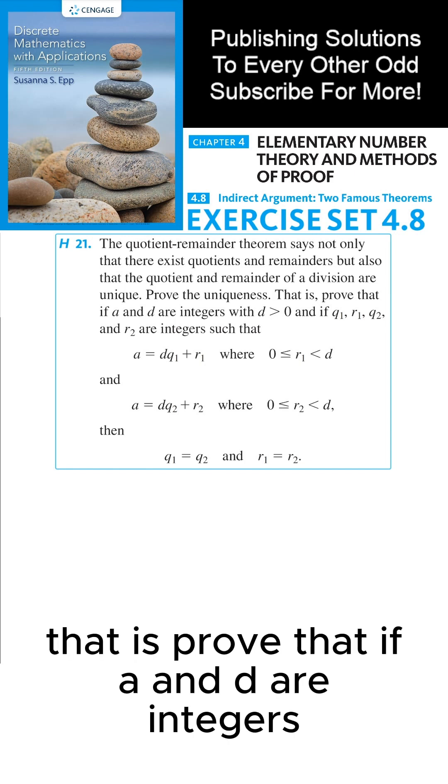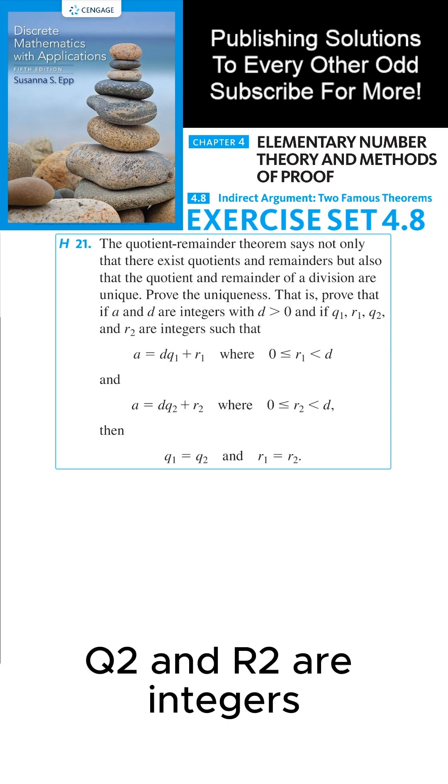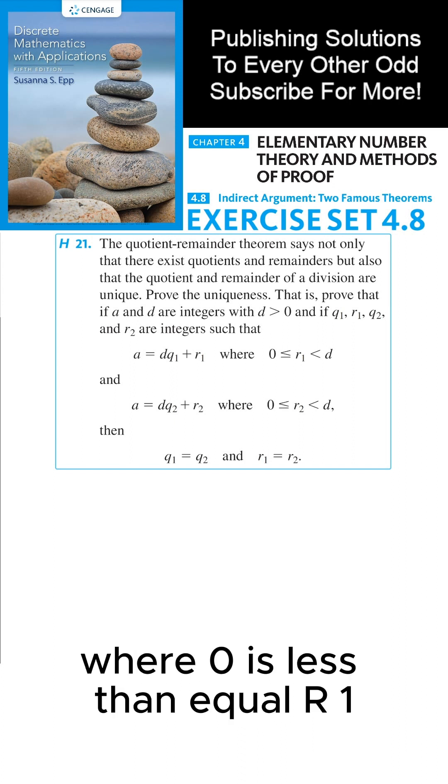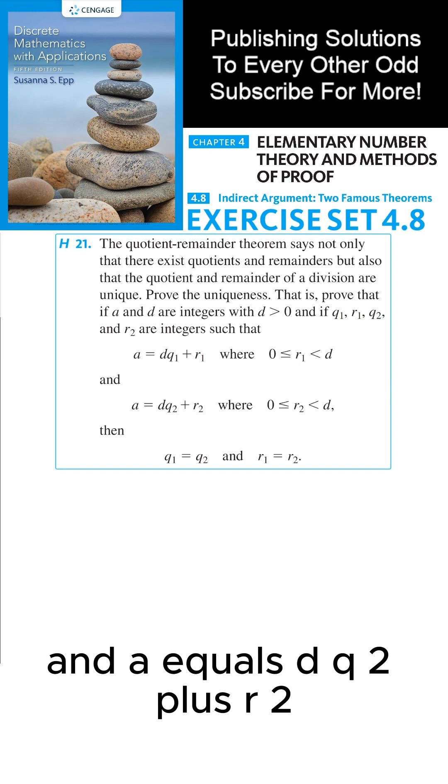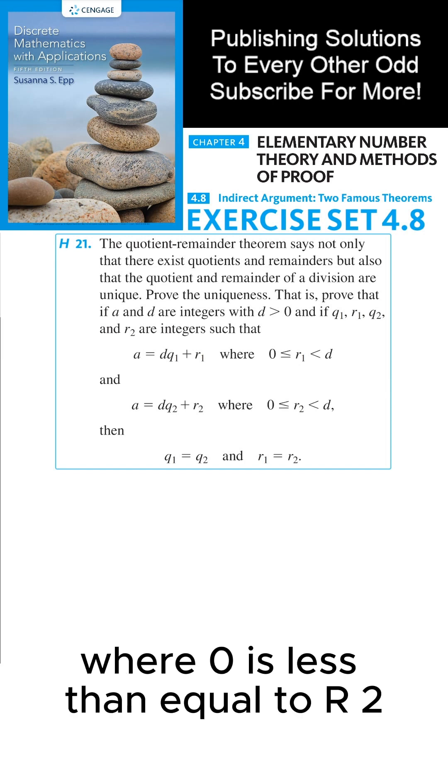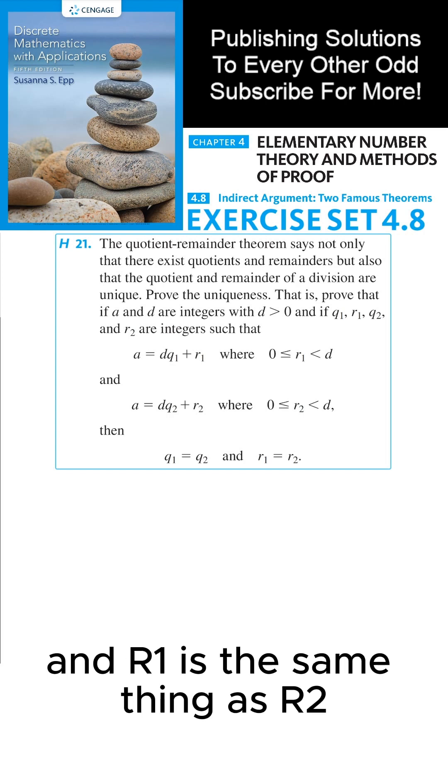That is, prove that if A and D are integers with D positive, and if Q1, R1, Q2, and R2 are integers, such that A equals DQ1 plus R1, where 0 is less than or equal to R1 which is less than D, and A equals DQ2 plus R2, where 0 is less than or equal to R2 less than D, then Q1 equals Q2 and R1 equals R2.